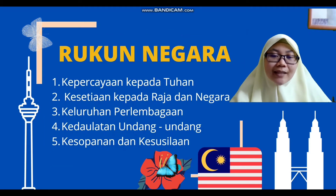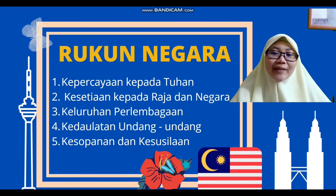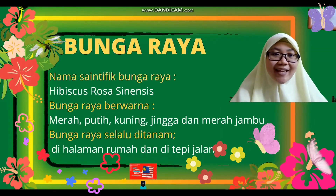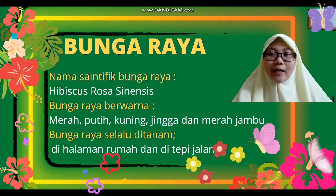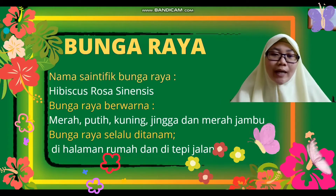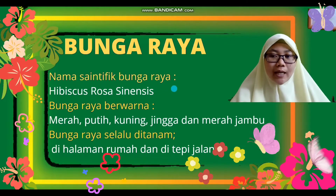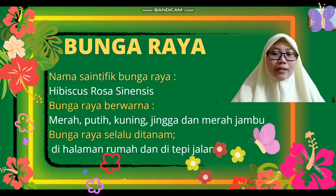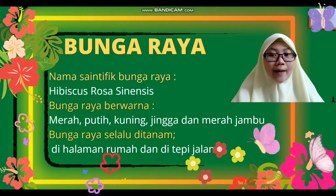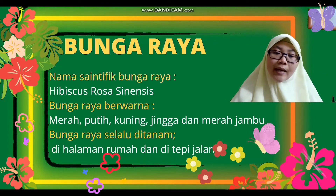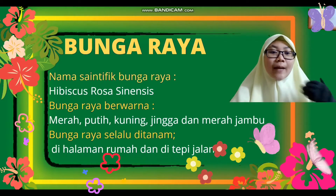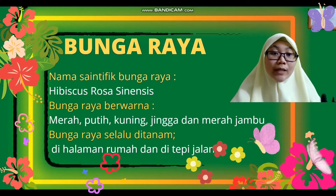Itu ialah rukun negara kita. Jangan tak tahu pula. Kemudian kita ada subtopik yang seterusnya iaitu bunga raya. Siapa tak kenal bunga raya? Yang ini ialah contoh bunga raya. Nama saintifik bunga raya ialah Hibiscus rosa-sinensis. Kalau ikutkan, bunga raya terdapat pelbagai jenis warna — salah satunya ialah merah, putih, kuning, jingga, jingga muda, merah jambu yang terang, dan merah jambu gelap.